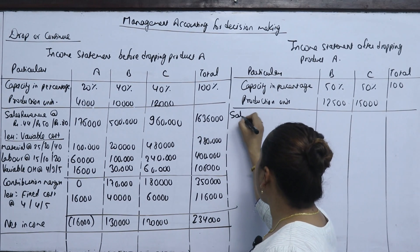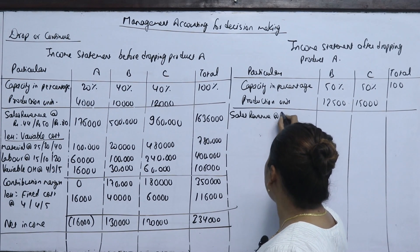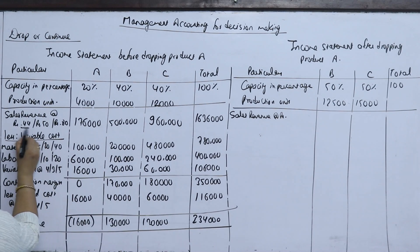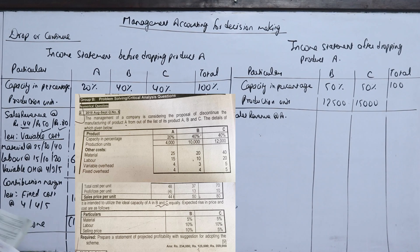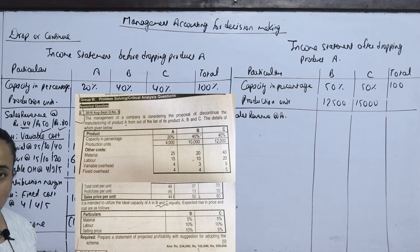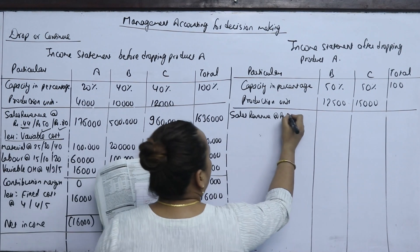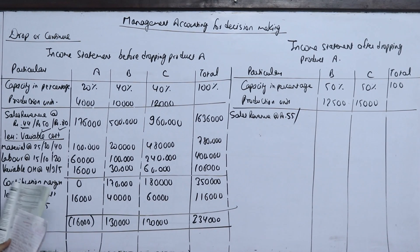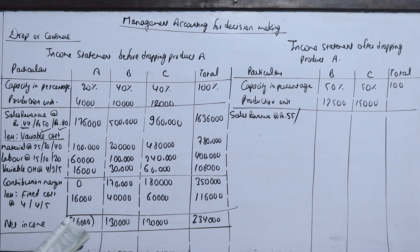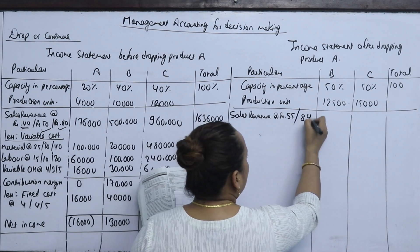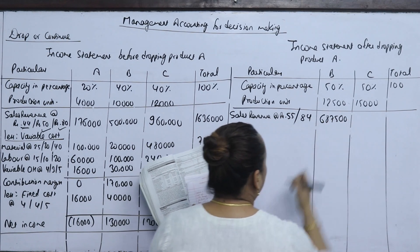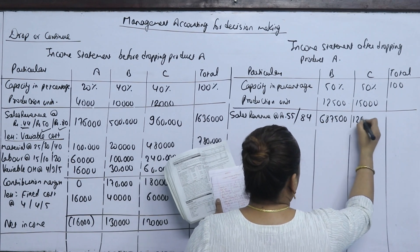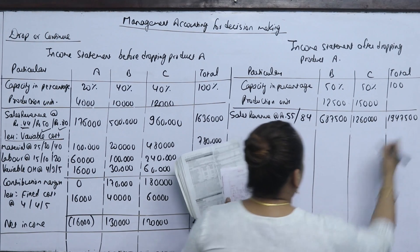Now the question is the sales revenue for B and C after dropping A. The selling price of B increases by 10% and C increases by 5%. So B's new price is 50 times 110% and C's new price is 80 times 105% = 84. Sales revenue: B is 55 into 12,500 = 6,87,500; C is 84 into 15,000 = 12,60,000. Total sales revenue is approximately 19,47,500.